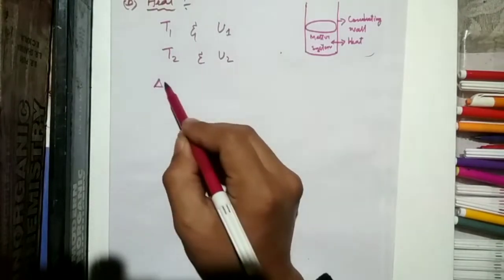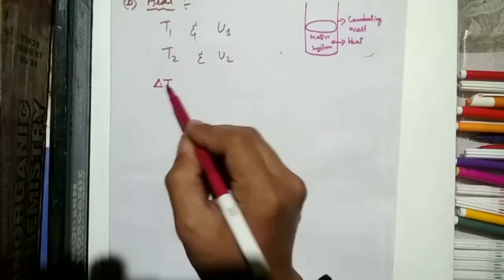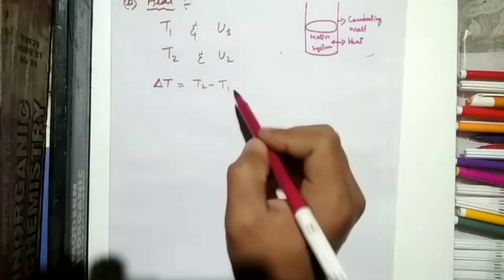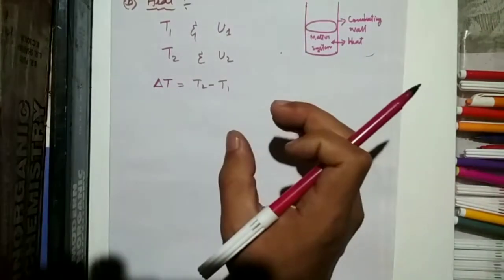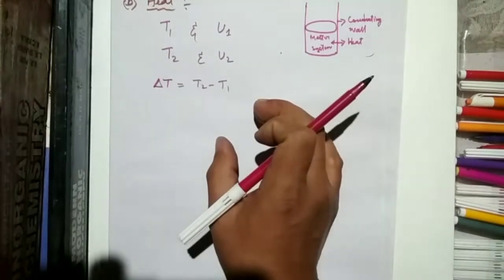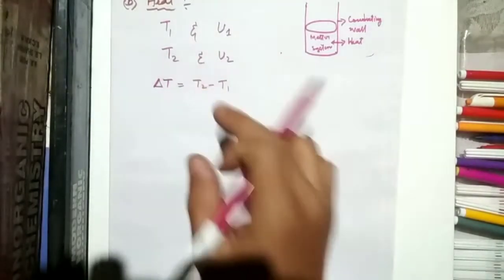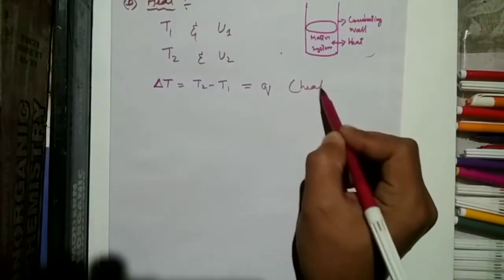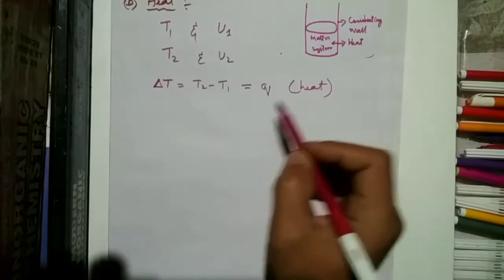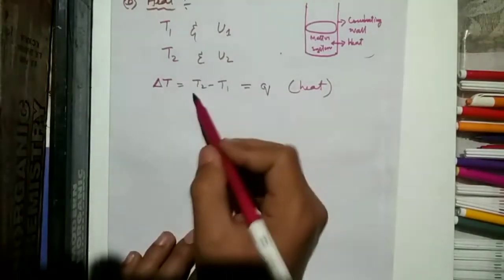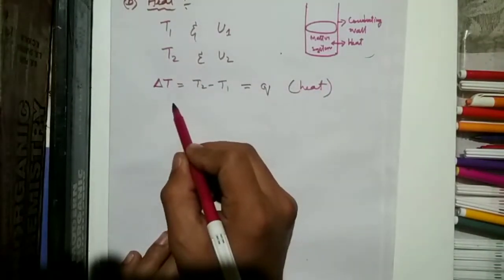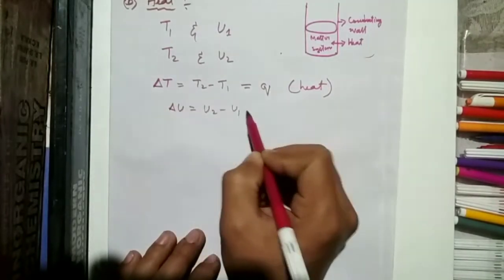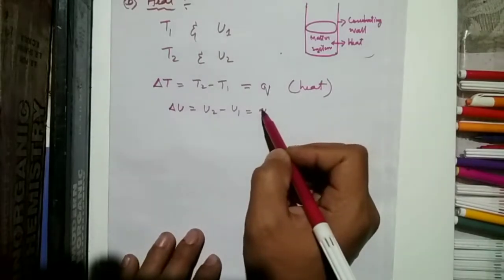When we apply heat from the surroundings into this system, the new temperature becomes T2 and internal energy becomes U2. The change in temperature is ΔT = T2 − T1. The change in internal energy is ΔU = U2 − U1, which represents the heat transferred.